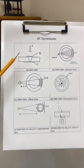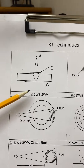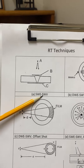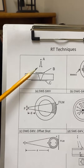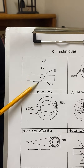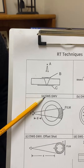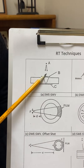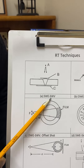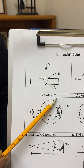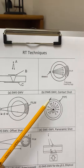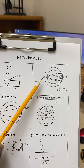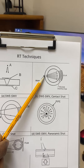This first one is called single wall exposure single wall viewing, because the radiation is going through a single wall — so we call it single wall exposure — and we are only viewing one thickness, so we call it single wall viewing. The next one is for pipe, where the radiation goes through two walls.